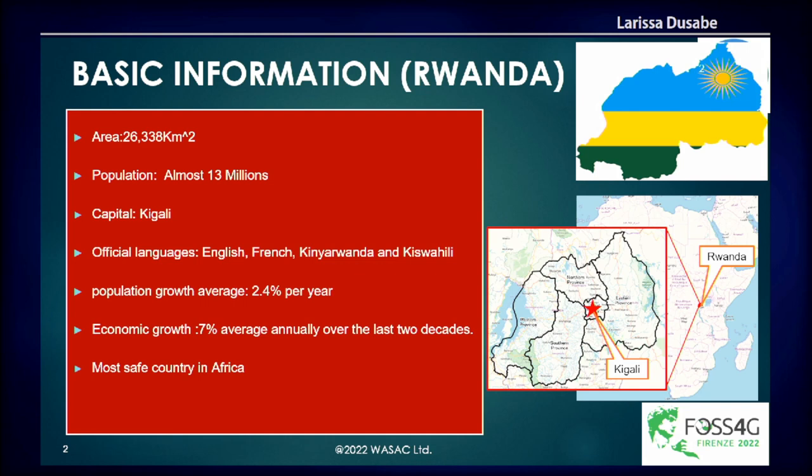Rwanda is located in the central eastern part of Africa. It has a population of 13 million, and for the last two decades, we had an economic growth of 7%, and it was ranked as one of the safest countries in Africa.